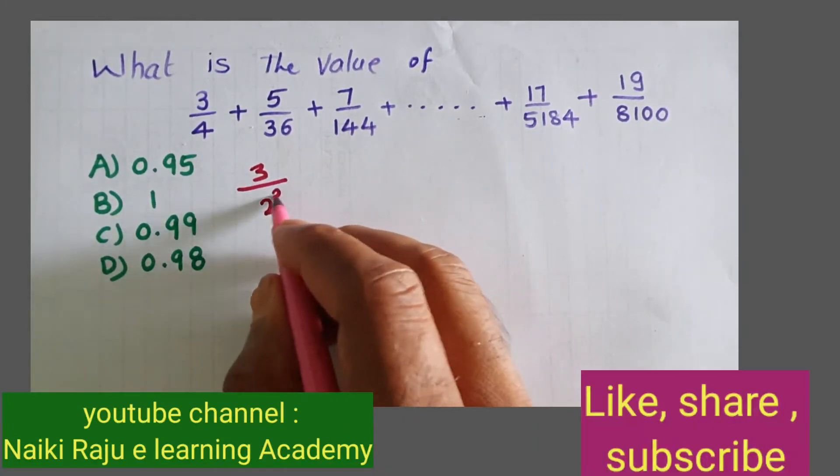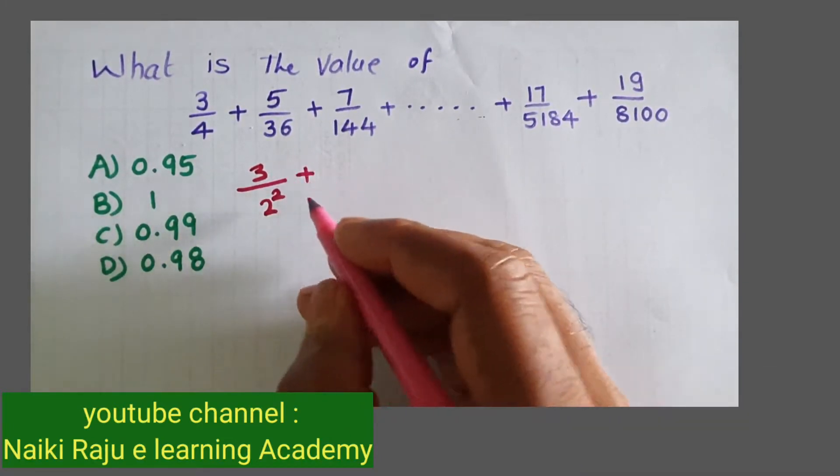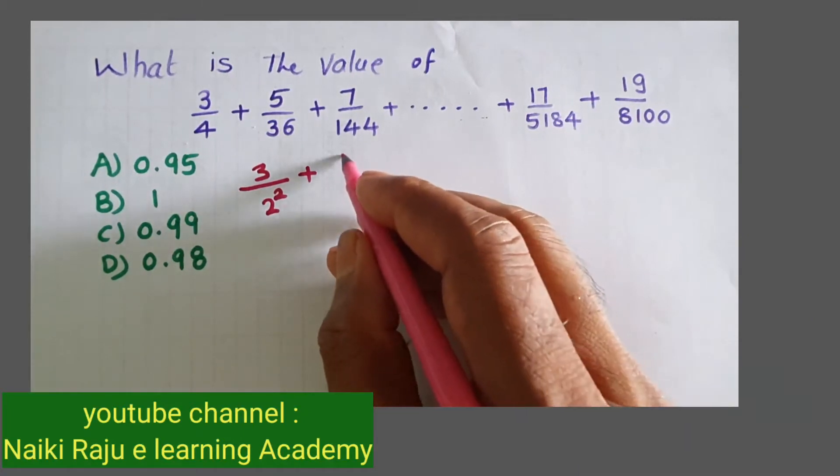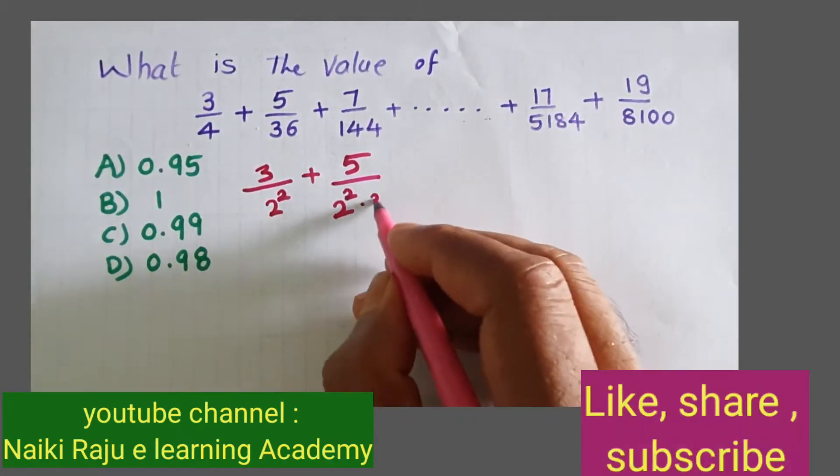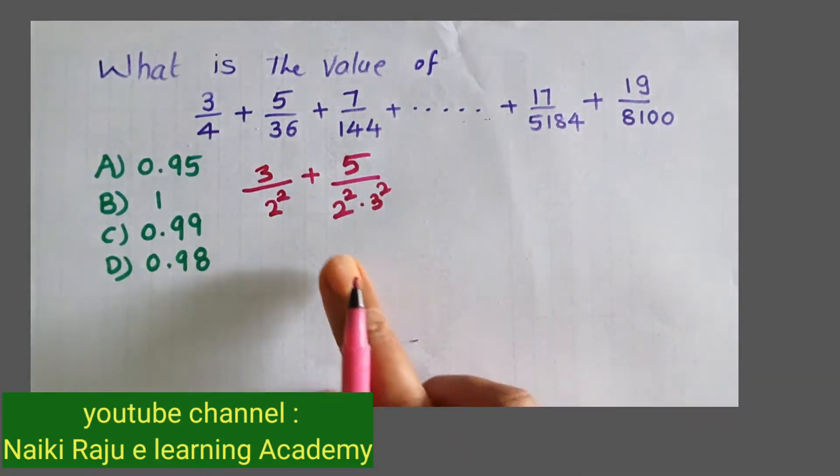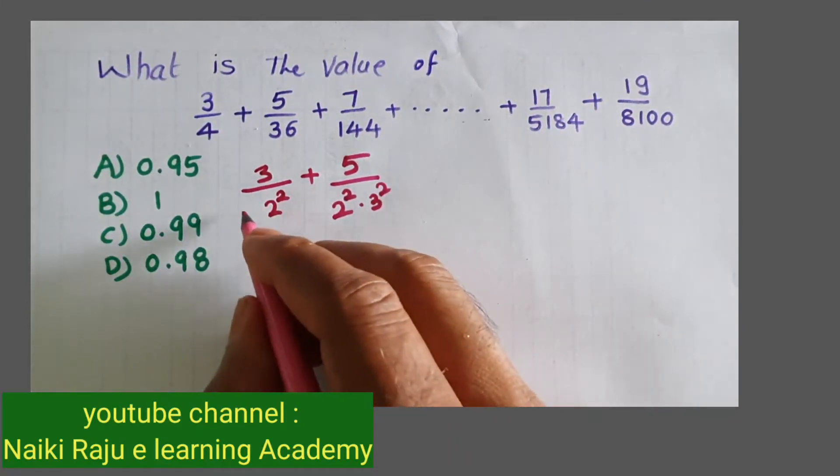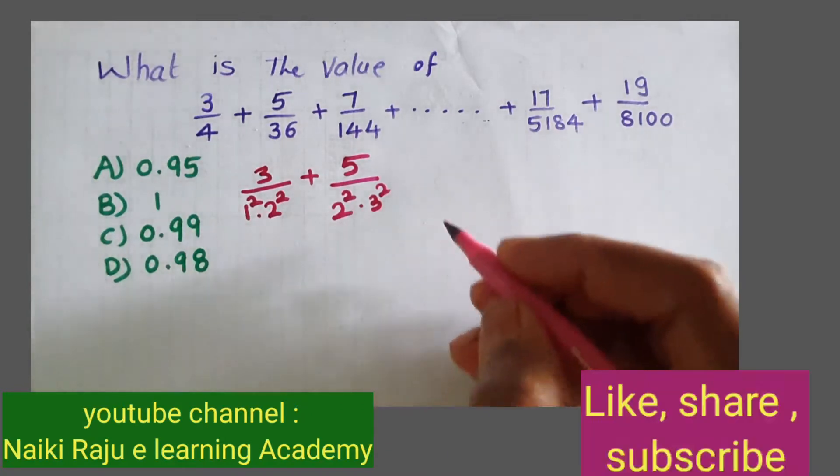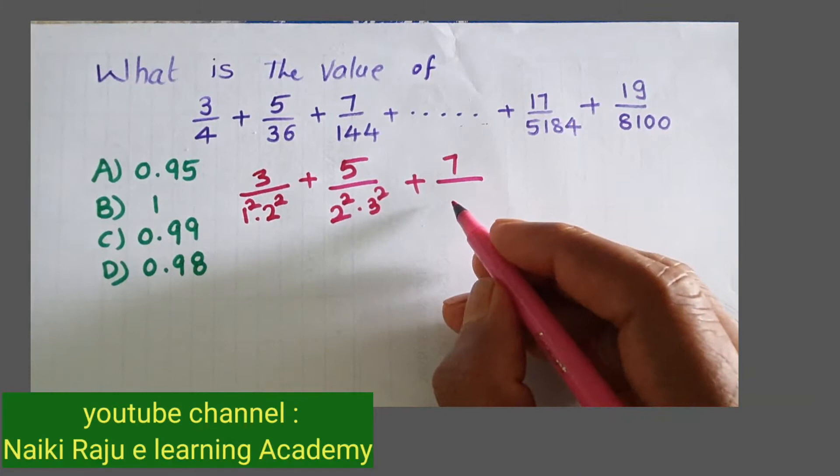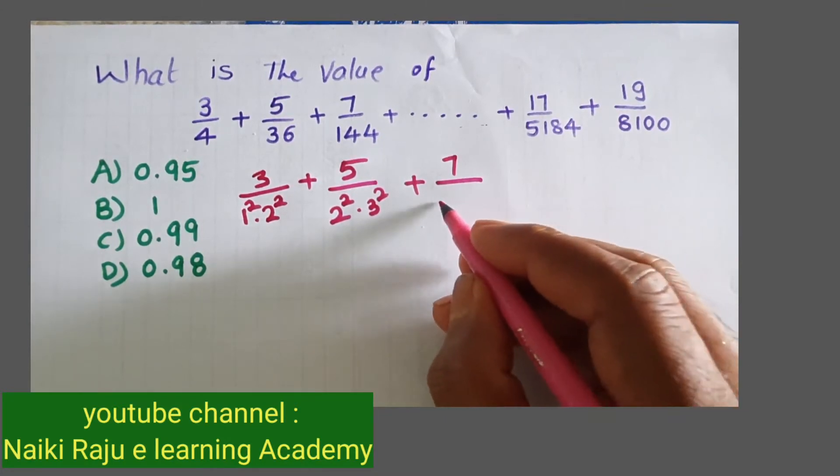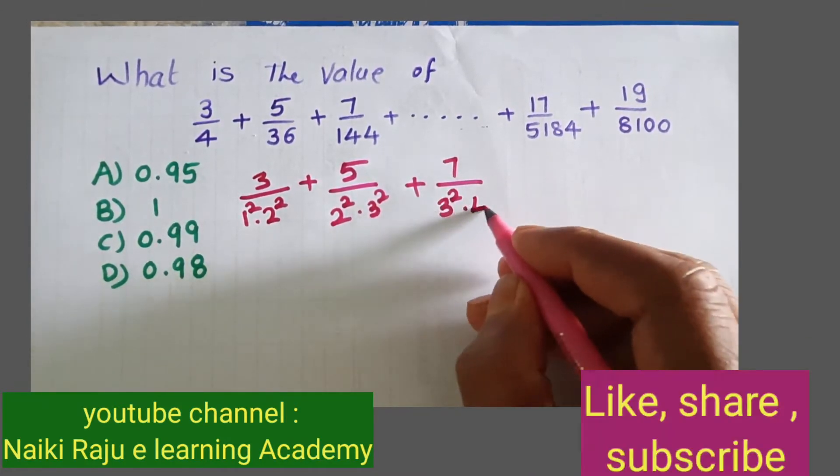3/4, I can write as 3 by 2 squared. Plus 5/36 - 36 is 2 squared times 3 squared, which equals 4 times 9. So 1 squared times 2 squared. Next, 7/144 - I write 144 as 12 squared, which is 3 squared times 4 squared.